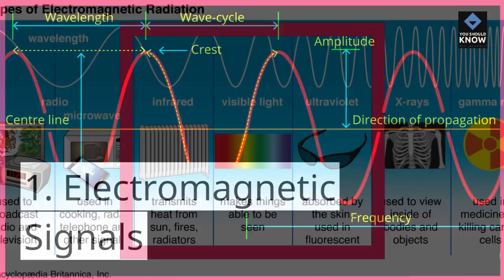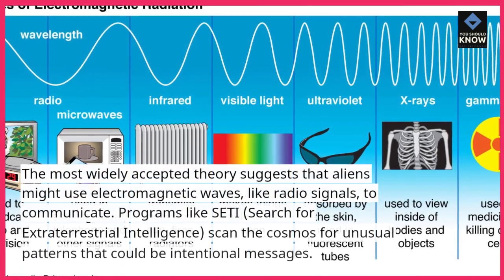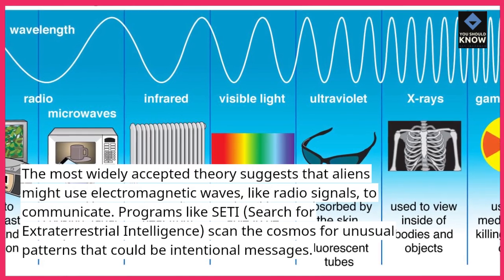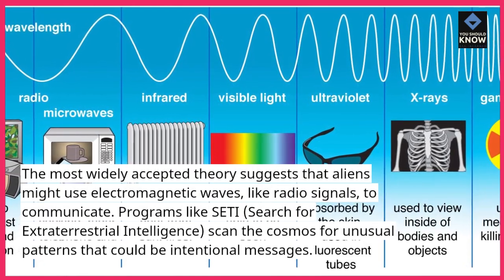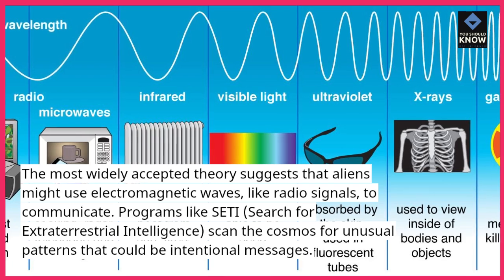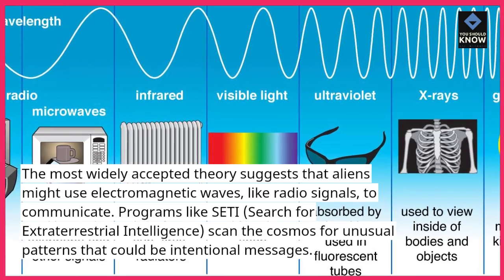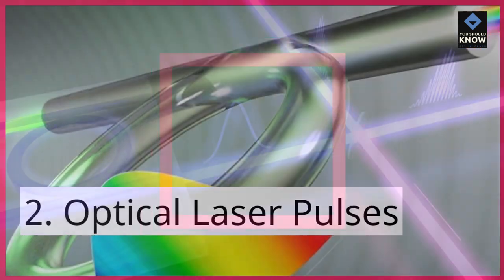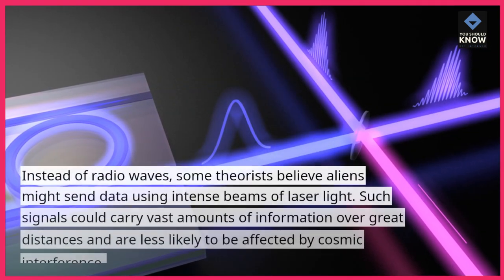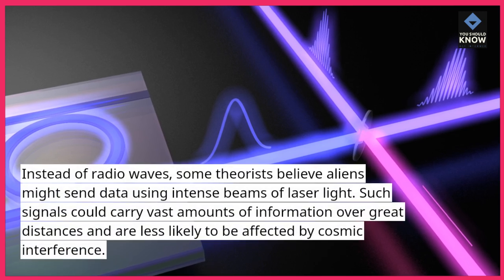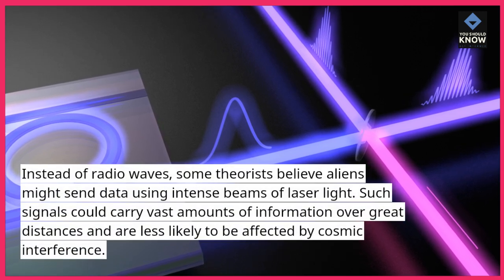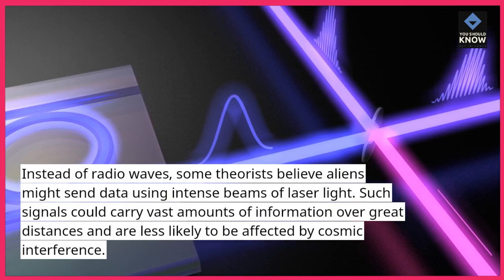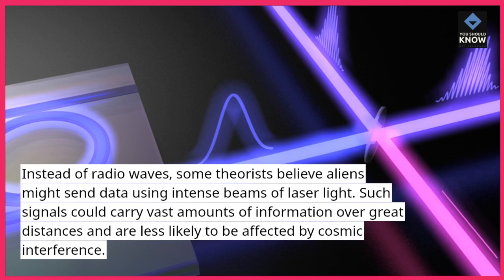Electromagnetic Signals: The most widely accepted theory suggests that aliens might use electromagnetic waves, like radio signals, to communicate. Optical Laser Pulses: Some theorists believe aliens might send data using intense beams of laser light. Such signals could carry vast amounts of information over great distances and are less likely to be affected by cosmic interference.